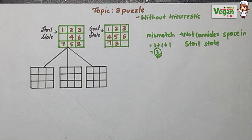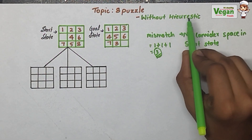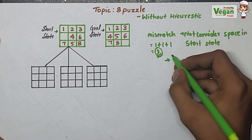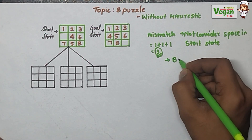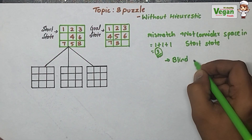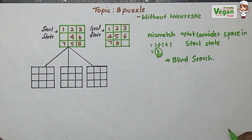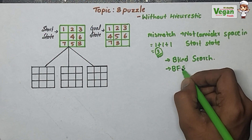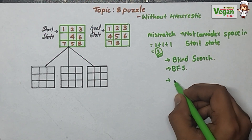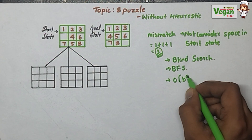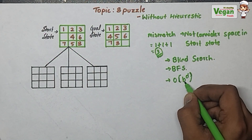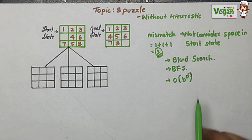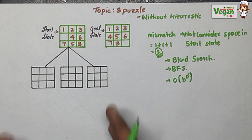Because we are not using the heuristic value, this is called the blind search algorithm. It is more like BFS — Breadth First Search algorithm. If we see the time complexity, it will be of order b to the power d, where b is the branching factor and d is the depth.